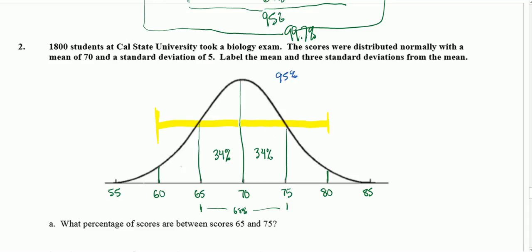We also know that if we go two standard deviations, from 60 which is two standard deviations to the left of the mean, and two standard deviations to the right would be 80, that is 95%. We're trying to find out what are those smaller areas between 60 and 65 and between 75 and 80. So I'm going to take 95 minus what we already have, 34 plus 34 which is 68.